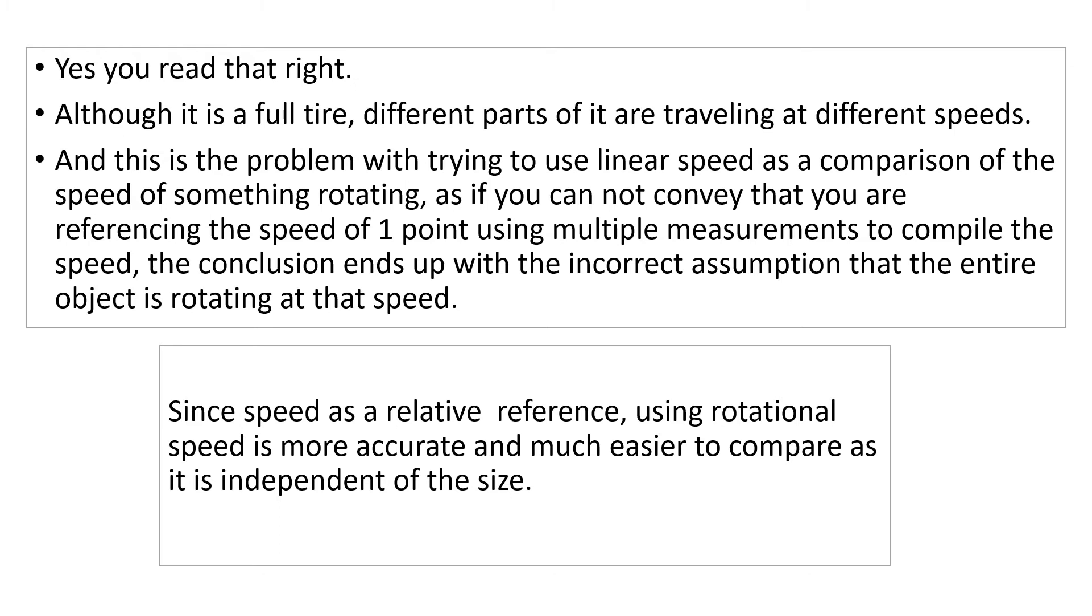And this is the problem with trying to use linear speed as a comparison of the speed of something rotating, as if you cannot convey that you are referencing the speed of one point using multiple measurements to compile the speed.